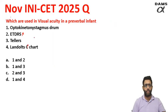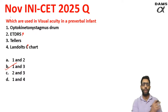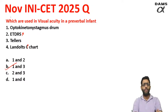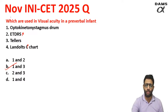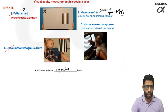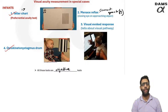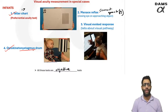Some say infant was not specified, only pre-verbal. If pre-verbal is given and infant is not specified, Landolt's can also be done if it is a bigger child who can indicate direction of C or E. But that was not in the options, so the best answer is options 1 and 3 — optokinetic nystagmus drum and Teller acuity cards. Optokinetic nystagmus is based on saccades (fast) and pursuits (slow) — this was also a PYQ from JIPMER.